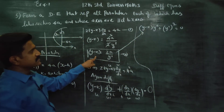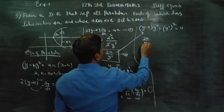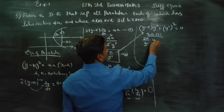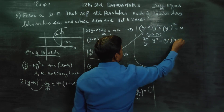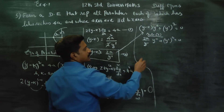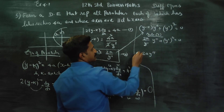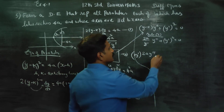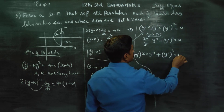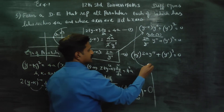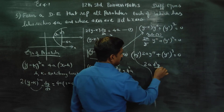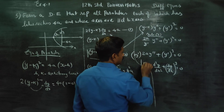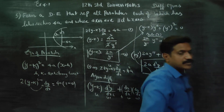We will substitute (y − k) = 2a / y′ into the second differentiation result. Substituting: (2a / y′) times y′ plus y′ squared equals 0. The y′ terms cancel when we multiply through by y′. Finally, we substitute back: d²y/dx² times dy/dx equals 0. This is the required differential equation.